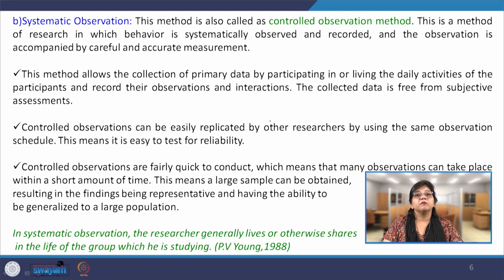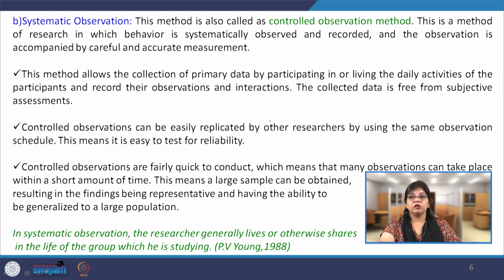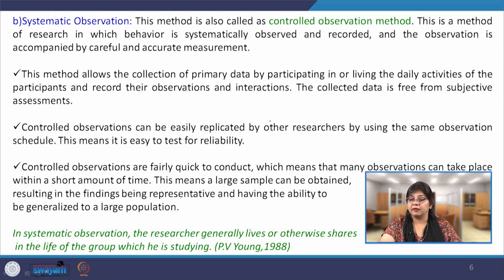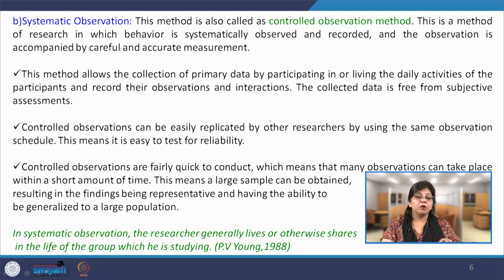The next is systematic observation, or the controlled observation method. This is a method of research in which behavior is systematically observed and recorded, and the observation is accompanied by careful and accurate measurement. In this kind of observation method, the situation is manipulated and individuals are selected purposively so that the observation can be made in a controlled situation. This method allows collection of primary data by participating in or living the daily activities of the participants and recording observations and interactions. In naturalistic observation, the researcher does not become part of the study group, but in systematic observation, the researcher becomes part of that study group.